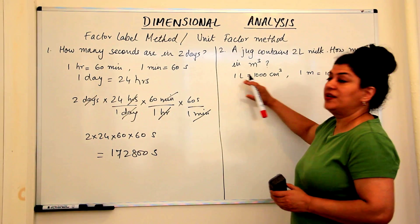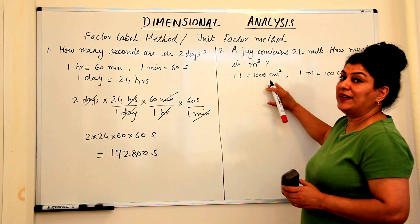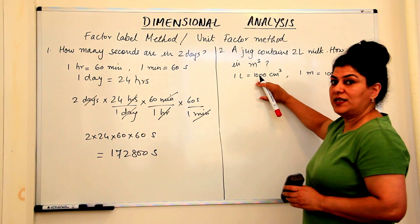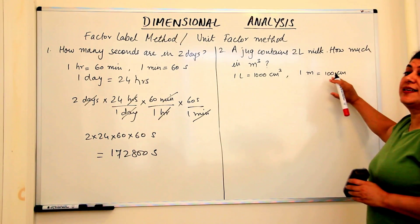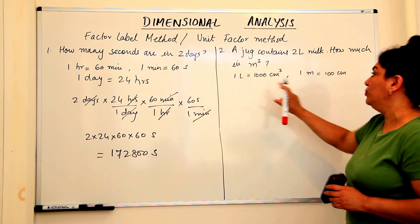We know that one litre is a thousand centimetre cube. So there is no direct relationship between a litre and a metre cube. One litre is a thousand centimetre cube and one metre is a hundred centimetres. But we want to convert it into metre cube. So what should we do?